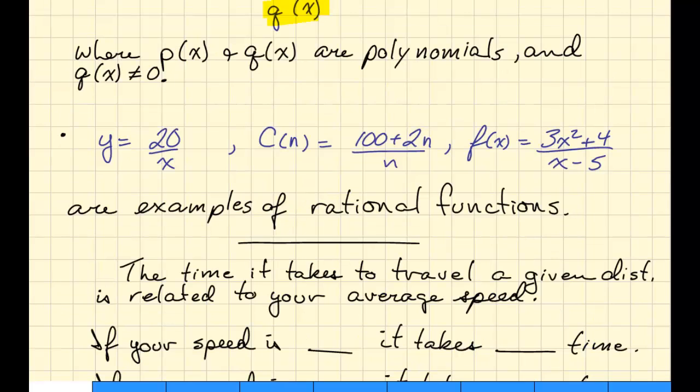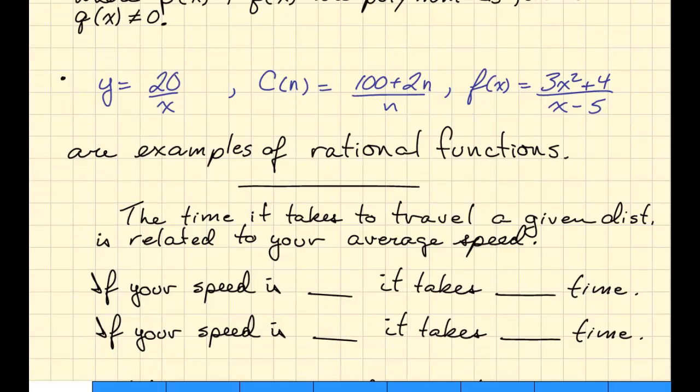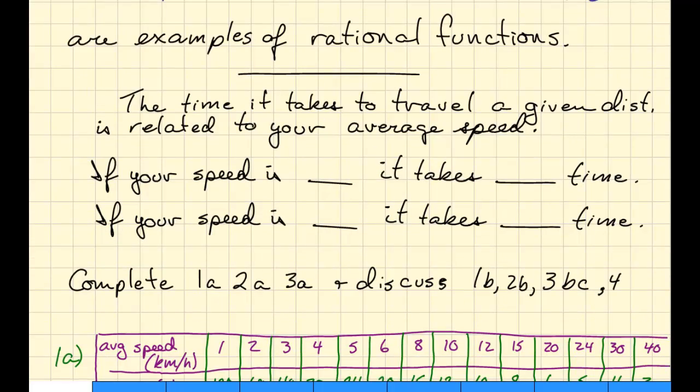So let's take a look at what happens when we're traveling. So if we're traveling a certain distance, the amount of time that it takes to travel that distance is related to your average speed. If your speed is low, then it takes more time. And if your speed is high, for any given distance, it takes less time.